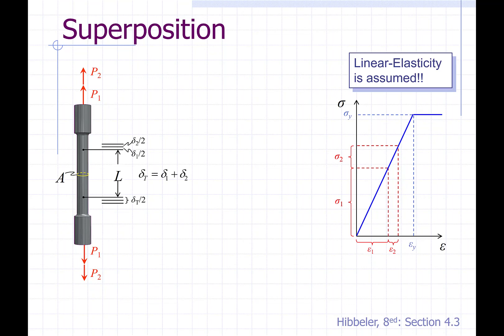Now we can use superposition to see these obvious calculations, that the total displacement is equal to the sum of the two independent displacements, delta 1 and delta 2. Likewise, the total load is the sum of the two independent loads. So Pt is equal to P1 plus P2.